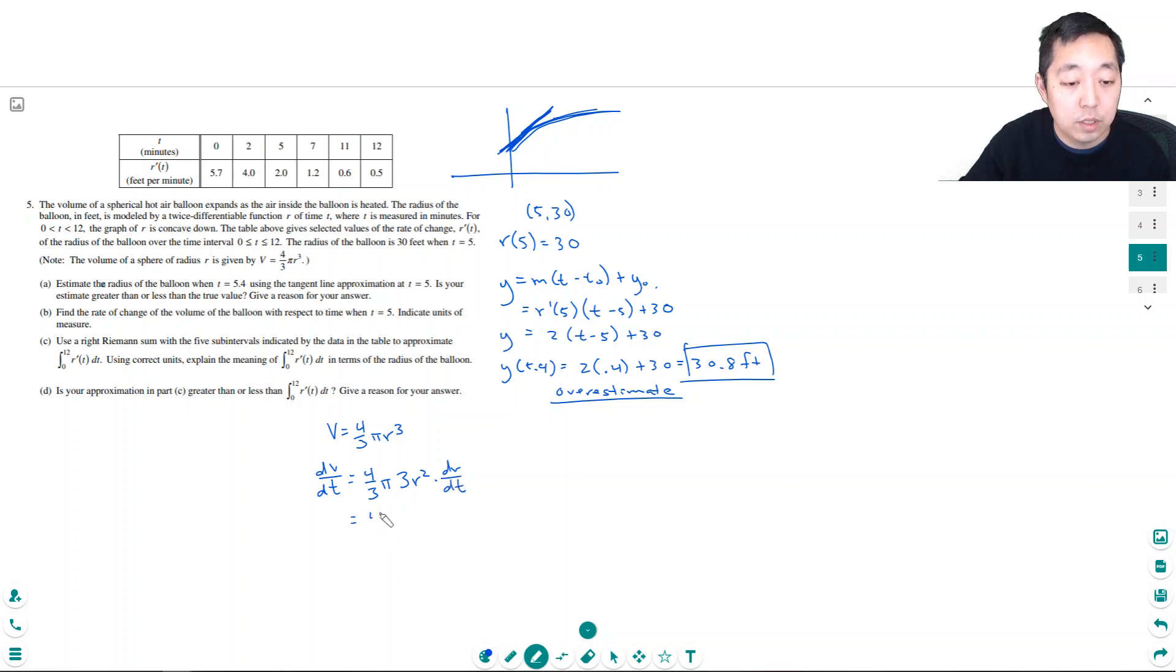So the 3's cancel, this is really 4 pi times r squared. At t equals 5, r was 30, so this is 30 squared. And dr/dt, which is r prime at 5, is 2. So this is 4 pi times 900 times 2, which is 7200 pi. The units here are cubic feet per minute because t is measured in minutes and the volume is cubic feet.